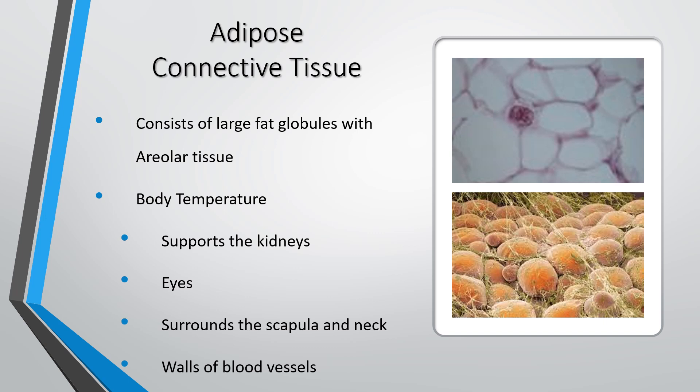Adipose connective tissue is essentially fat, consisting of large fat globules with areola tissue in between. Adipose tissue helps to maintain body temperature and supports the kidneys, which are surrounded by adipose tissue to keep them warm and protect them. We also have adipose tissue around the eyes, the scapula, the neck, and the walls of the blood vessels.